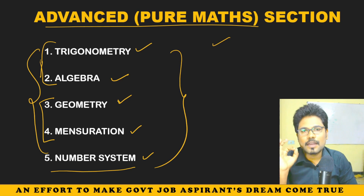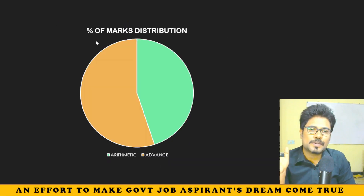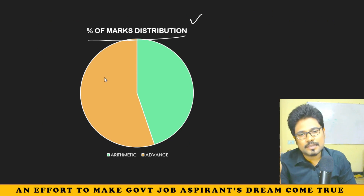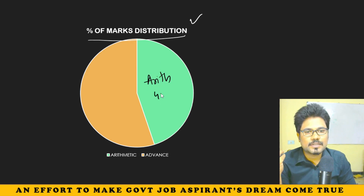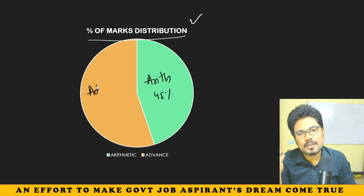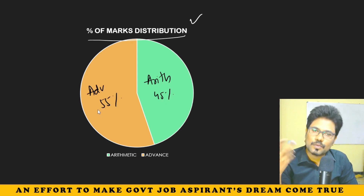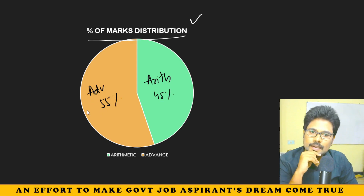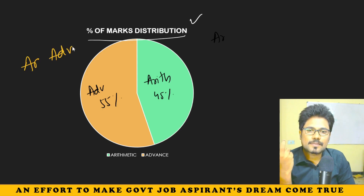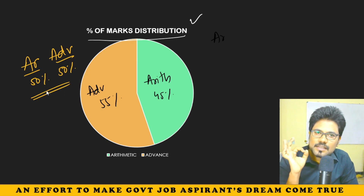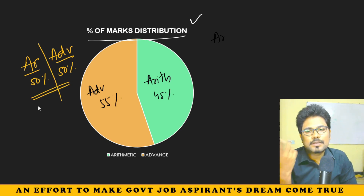Now, regarding the percentage of marks distribution: Arithmetic and Advanced overlap. Arithmetic is around 45% and Advanced is around 55%. But reverse is also watched. It is a simple point — for SSC preparation, it is approximately 50% each for Arithmetic and Advanced. You need to study everything. Got it? This is the main concept — you have to study all of it.